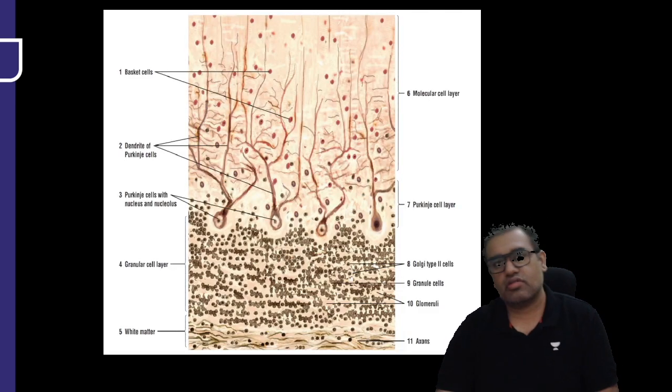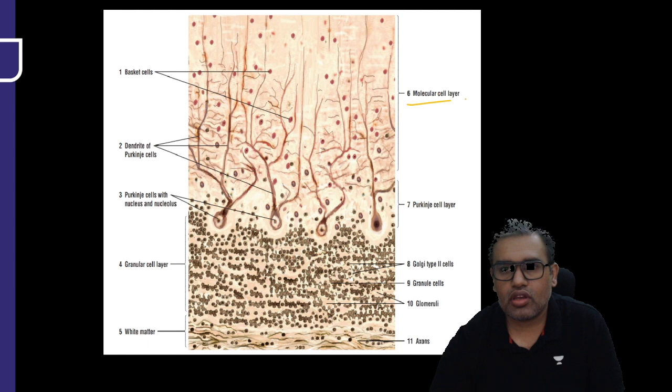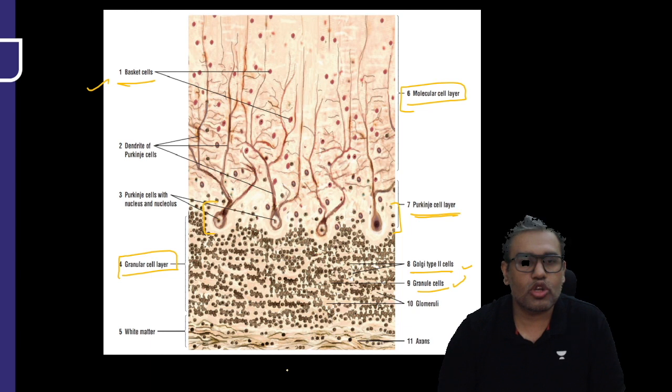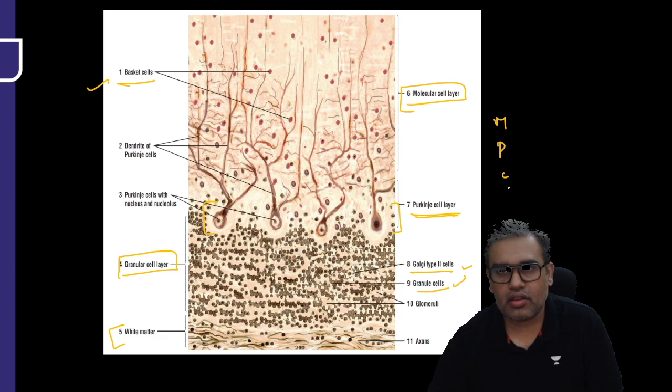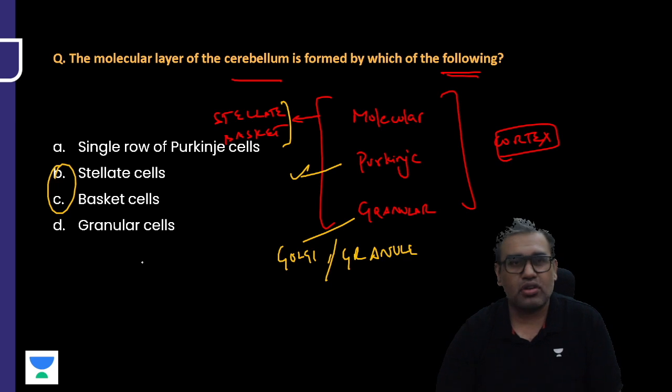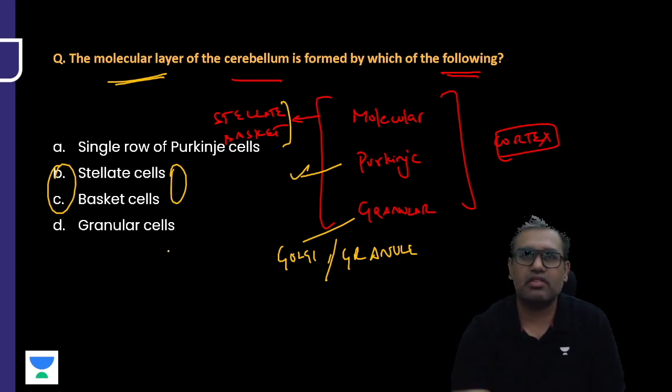Looking at the image, it's a histological image of the cerebral cortex. This is the molecular layer with basket cells being shown. These are very large Purkinje cell bodies having the Purkinje cell layer. Apart from basket, you can also have stellate cells. This is the granular cell layer having mainly granule cells and some glomeruli. Deep to the cortex we have white matter. Remember: molecular, Purkinje, and granular. Molecular has stellate and basket cells.